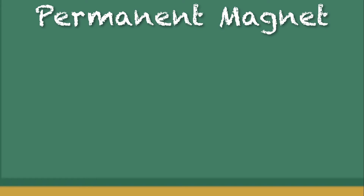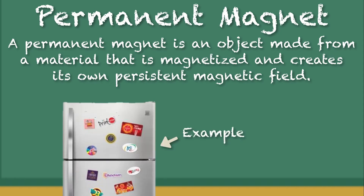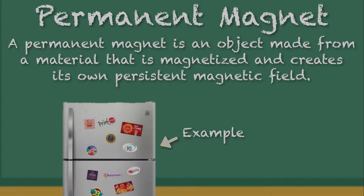A permanent magnet is an object made from a material that is magnetized and creates its own persistent magnetic field. An everyday example is a refrigerator magnet used to hold notes on the refrigerator door.